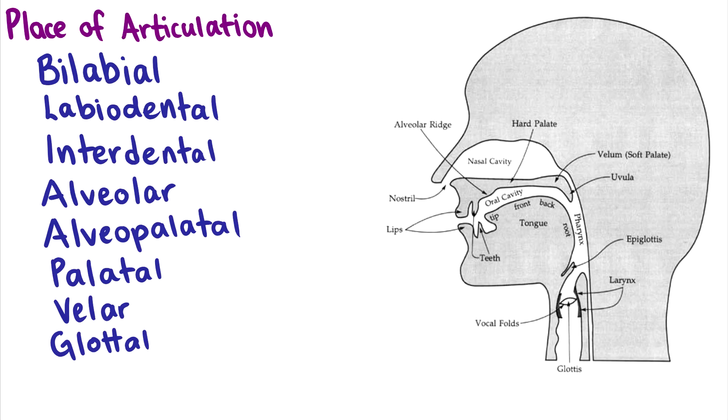So the first thing we're going to talk about is the place of articulation, and this is going to be a very brief slide because we'll go over the places individually for each of the sounds we cover, but just to give you a general idea of what these terms mean and what it looks like in your mouth.